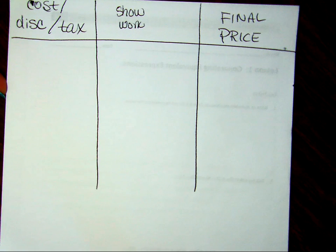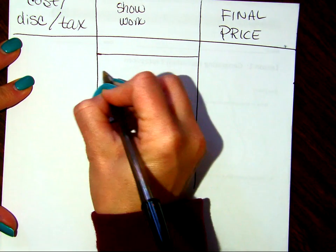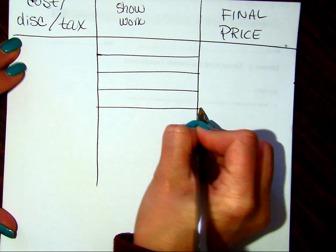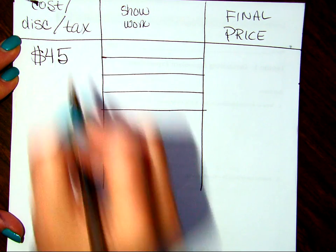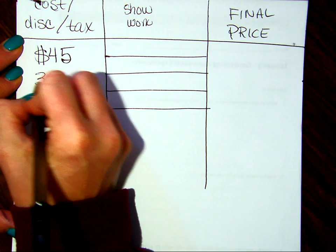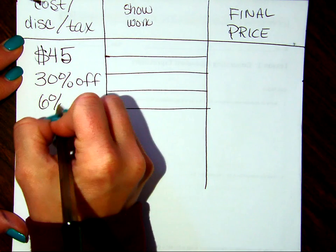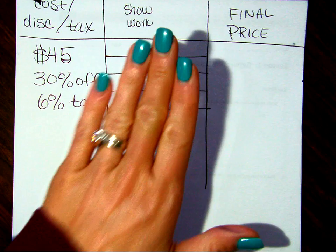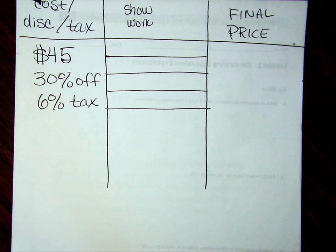Just out of curiosity, I'm going to give you an item, the discount and the tax, and it consists of four steps. If the item costs $45 but it's on sale for 30% off, and there's a 6% sales tax — you don't need to show anything just yet. All I want you to do is, when you think you know the final price, hold up your calculator screen to me and show me, and I will check to see if you're right.